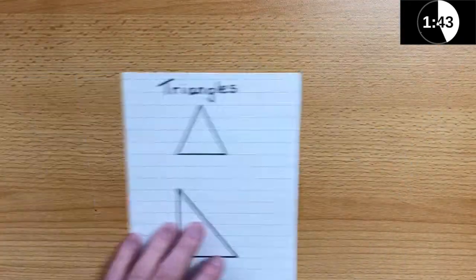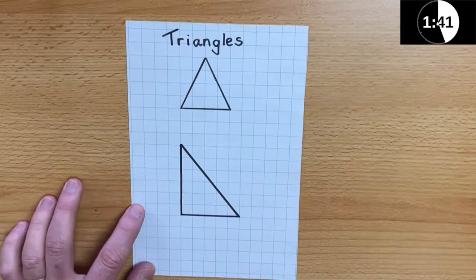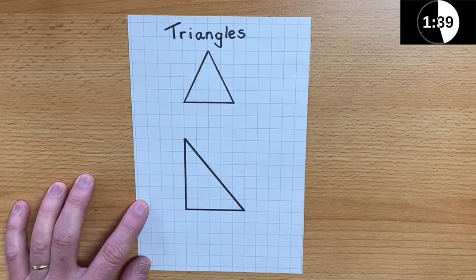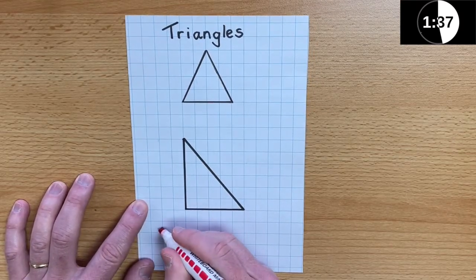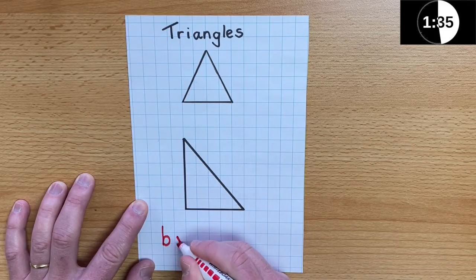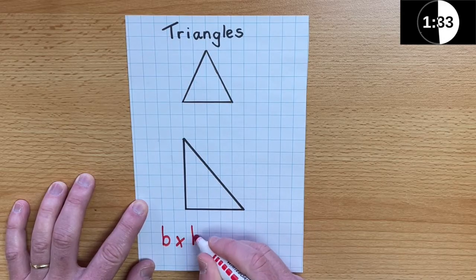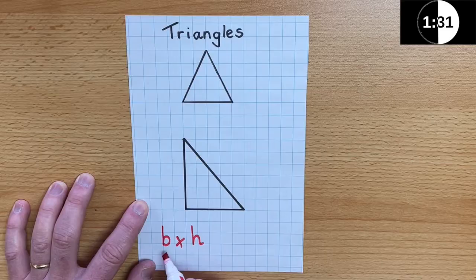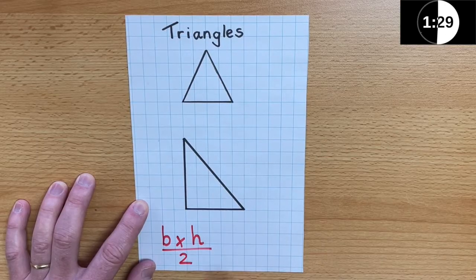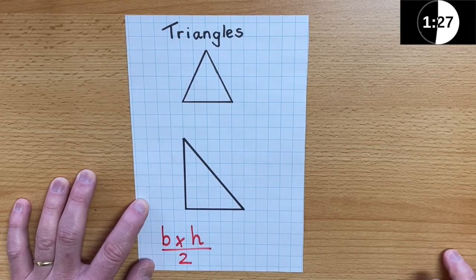How easy was that? Okay, triangles. Now, for triangles, the formula is very similar. It's base multiplied by height. But then, we must divide that answer by 2.